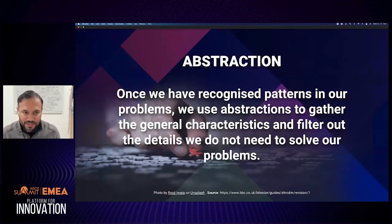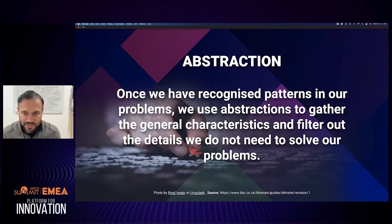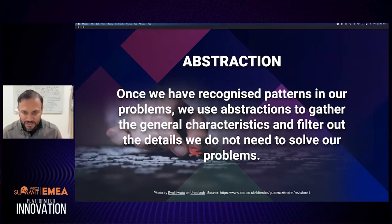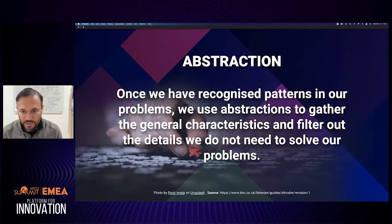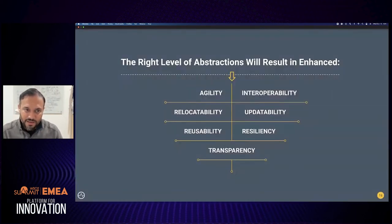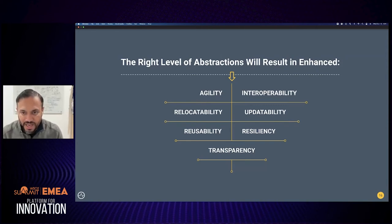Let's look at abstractions, which is one of the main areas we need to address. Abstractions apply in real life and are heavily utilized in computer science. When we recognize common recurring patterns, we identify what's required to implement solutions and filter out additional details — because additional details create noise and don't help solve problems. Abstraction helps us focus and identify the necessary information to be productive and deliver solutions. The right level of abstraction results in enhanced agility and creates interoperability between systems, data, and people.